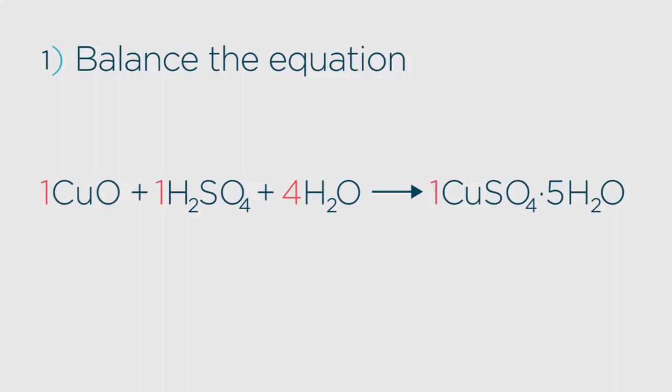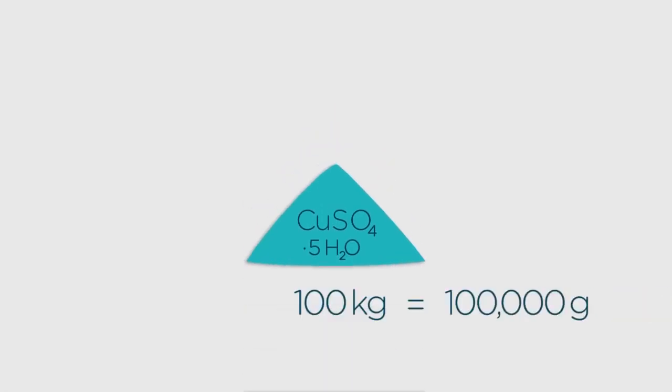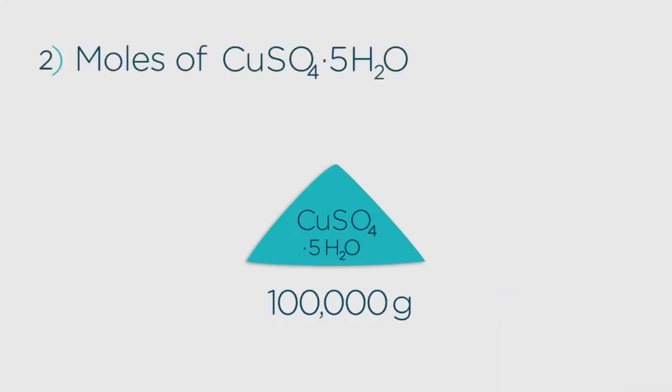You now know that every 1 mole of copper oxide reacts to form 1 mole of copper sulfate. 100 kilograms or 100,000 grams of the copper sulfate are required. We need to know how many moles of the product this represents and here's where the equation comes in.